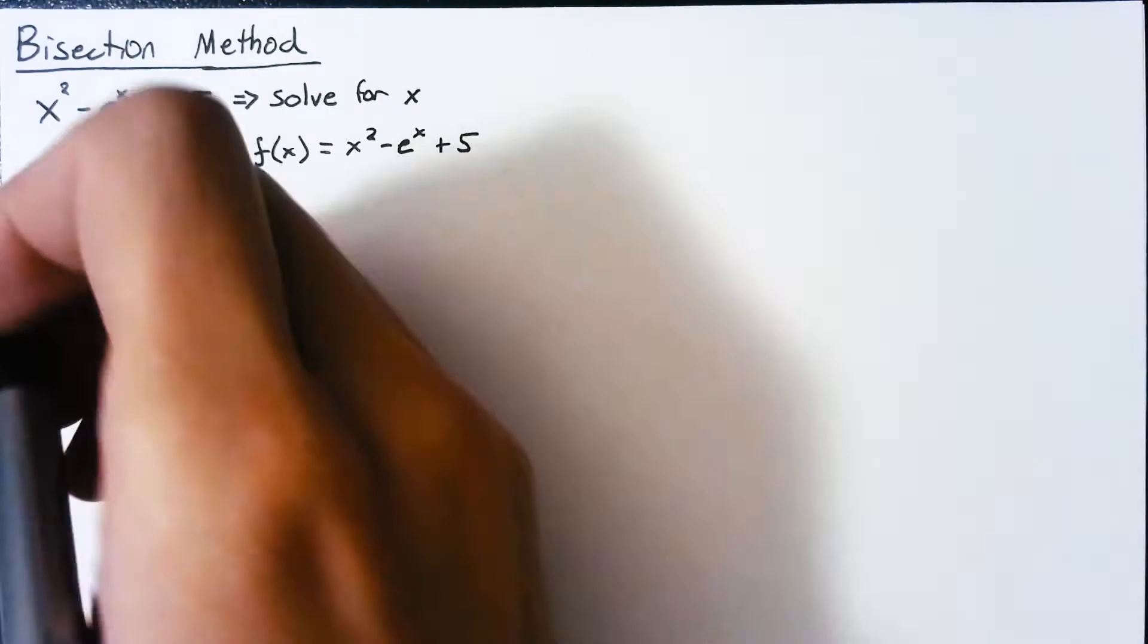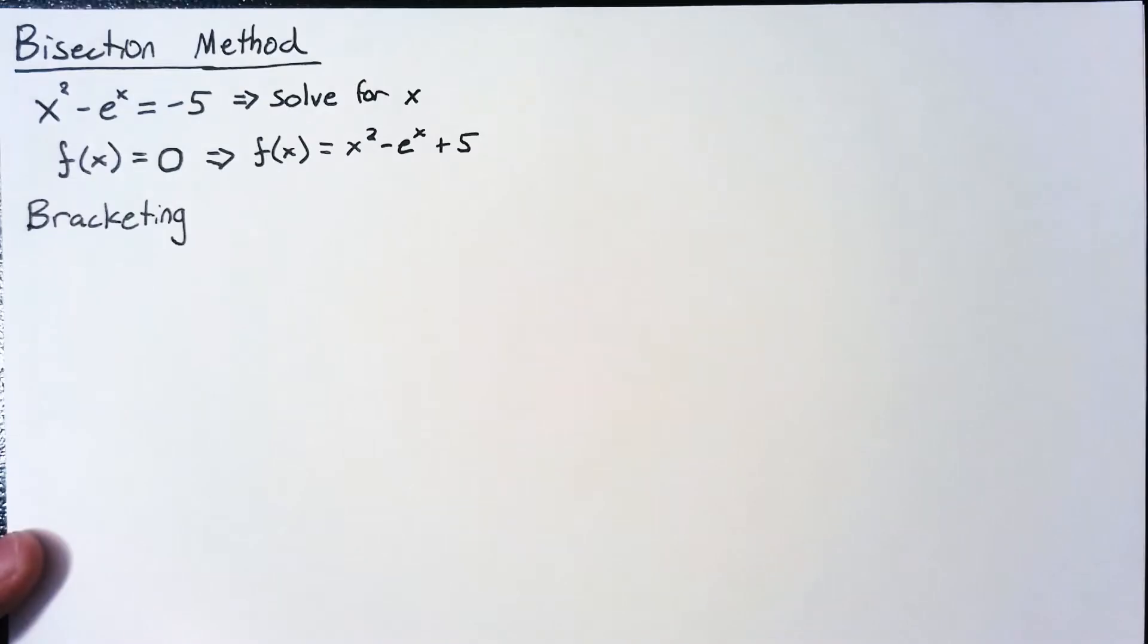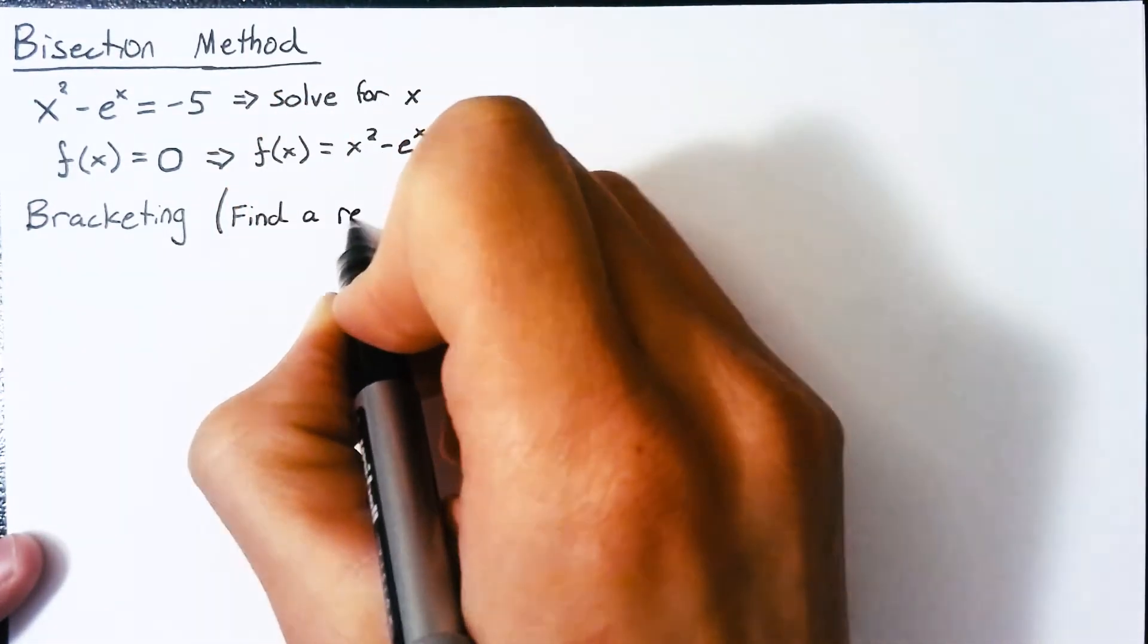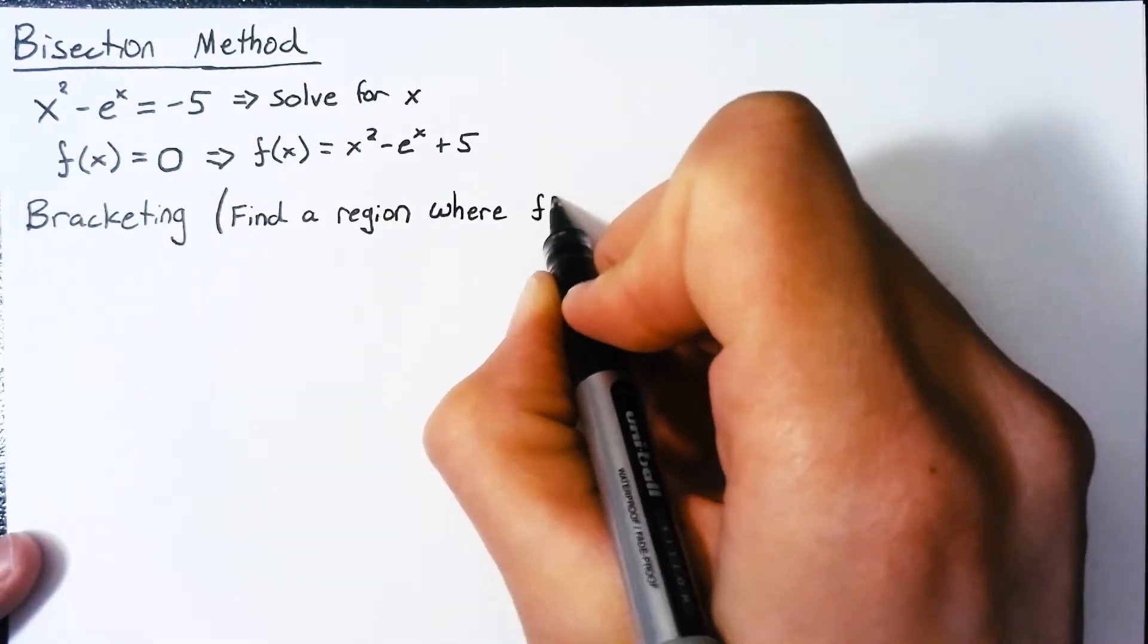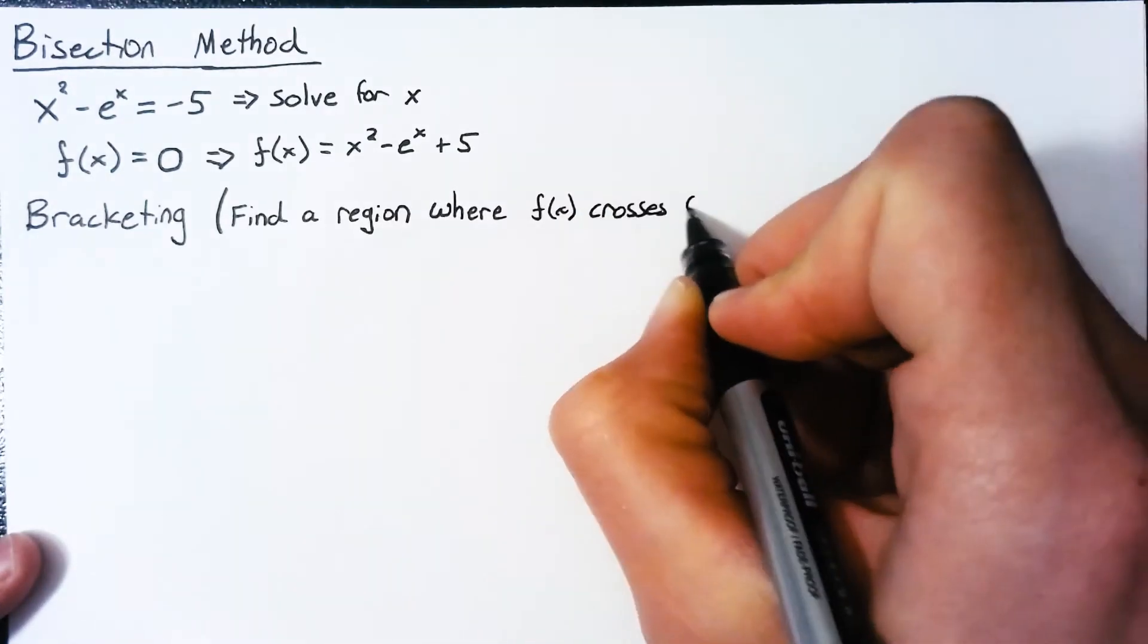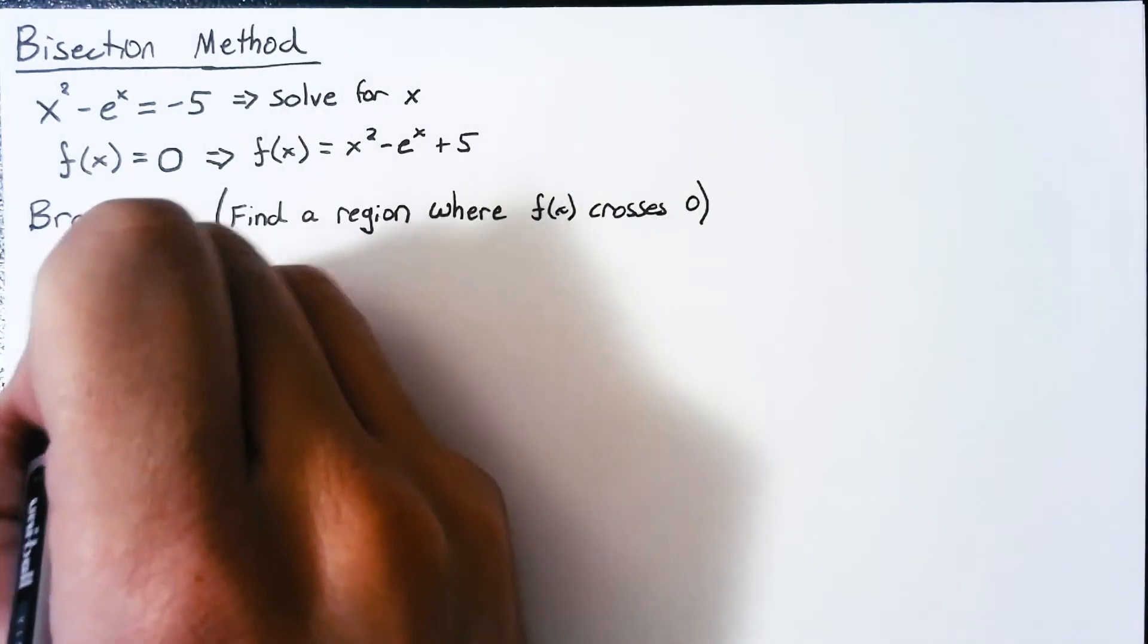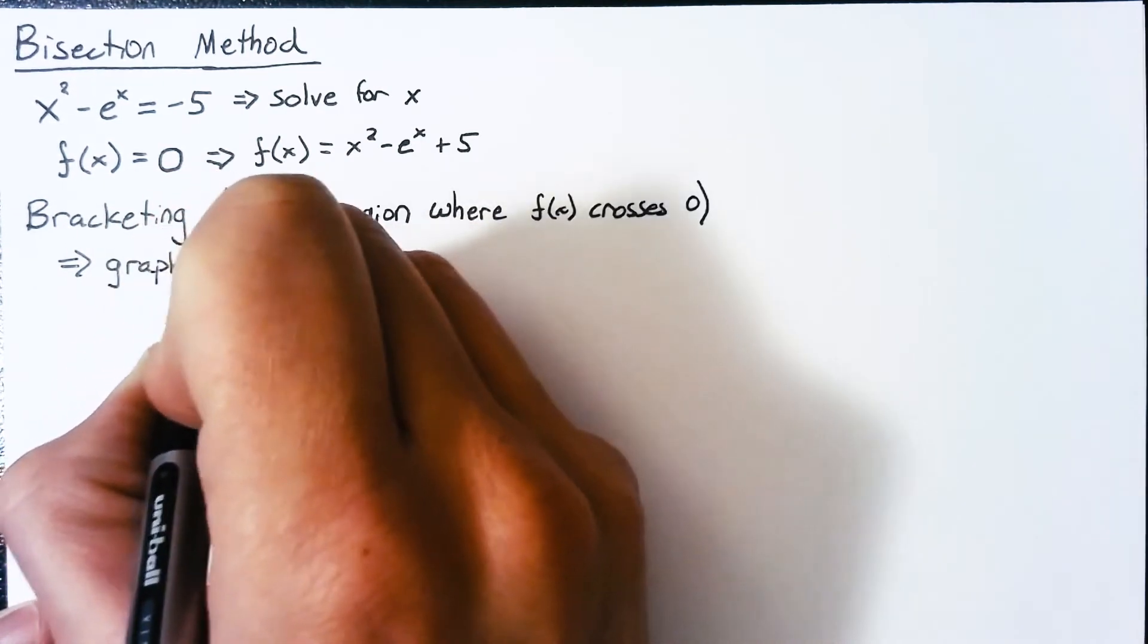Now, this is a two-step process, and our first step is known as bracketing. And what bracketing means is that we are trying to find a region where in some point in there, our function is equal to 0. And there are two ways of doing this. The first, and probably the simplest, is just to do it graphically.